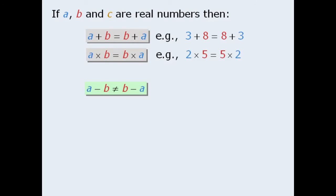Now, subtraction, on the other hand, is not commutative. In this case, the order of the numbers does matter. For example, 4 minus 5 does not equal 5 minus 4.